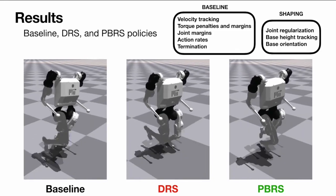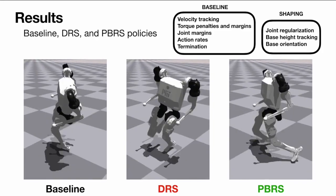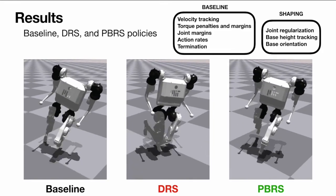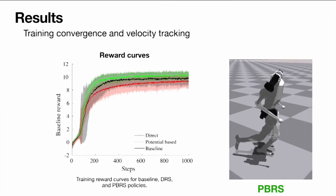We compare the policies trained in simulation with base rewards only, direct shaping, and potential-based shaping rewards. As expected, the policies trained with shaping rewards are better than the baseline, but the difference between DRS and PBRS is relatively small when both are tuned well.